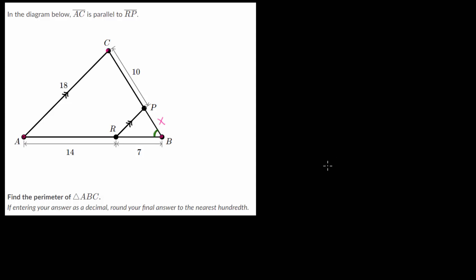We can start by noticing that they each share angle B. Because these two lines are parallel to each other, we can use the properties of parallel lines to show that the other two angles in each triangle correspond to each other and are equal. Angle A is equal to angle PRB, since these are corresponding angles, and in parallel lines corresponding angles are equal. Similarly, angle C is equal to angle RPB, since again, in parallel lines corresponding angles are equal.